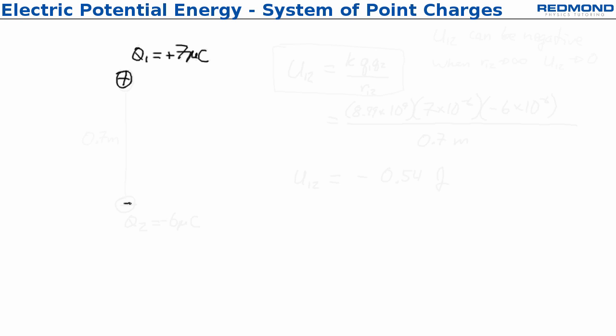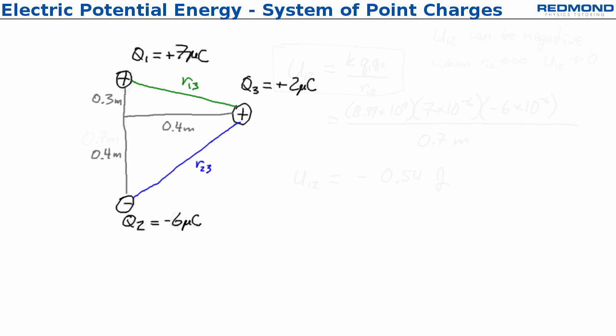Now I'm going to bring in the third charge. q3 is positive 2 microcoulombs, and it's located a distance 0.4 meters away from the line connecting q1 and q2. When I bring in q3, I need to look at the interactions between q1 and q3, and q2 and q3. I have two different things to look at. The first one is q1 and q3, so u13 equals k*q1*q3 over r13, and I can substitute in and get 0.25 joules.